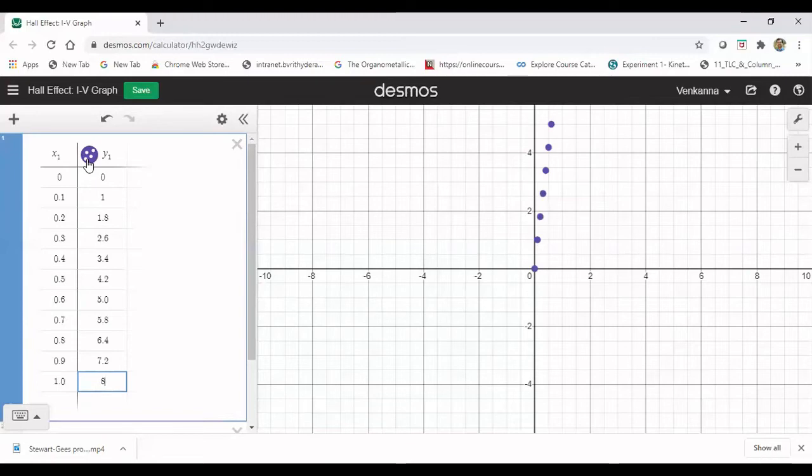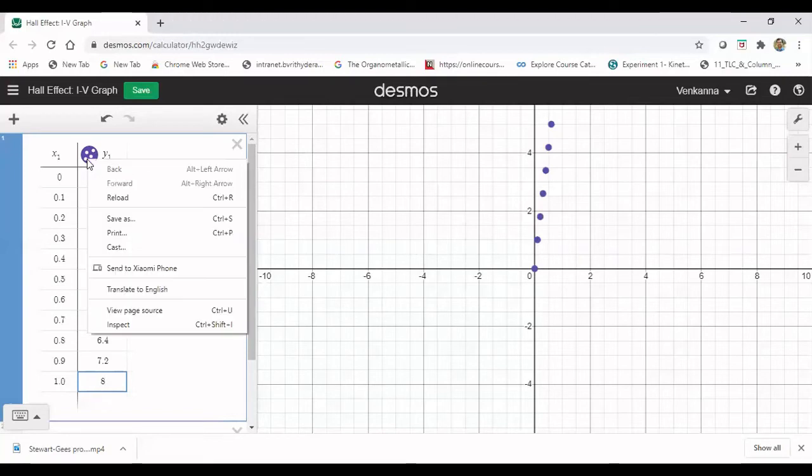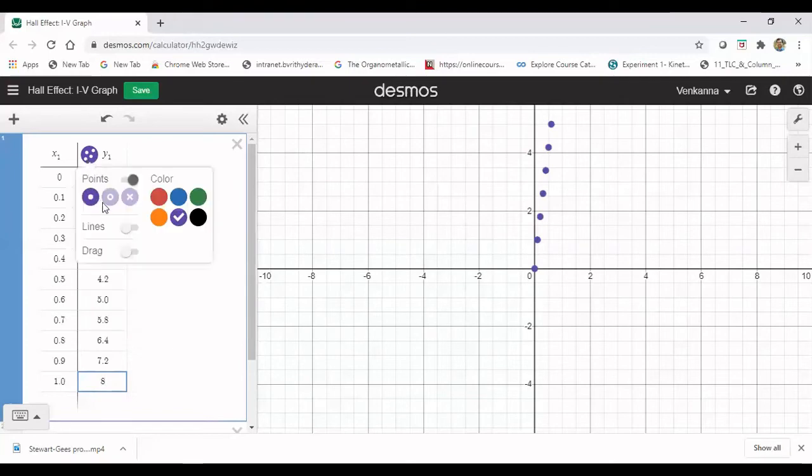Let's change the color and style of the points in our table. For that, click and hold the icon at the top of the table. You will get different colors. You can change the color and have a line.